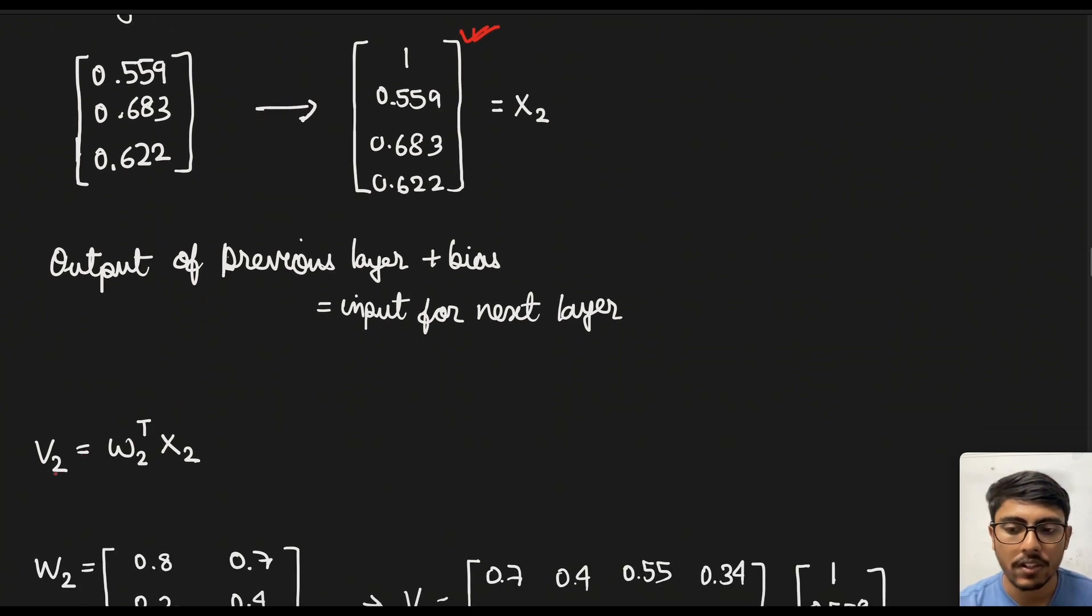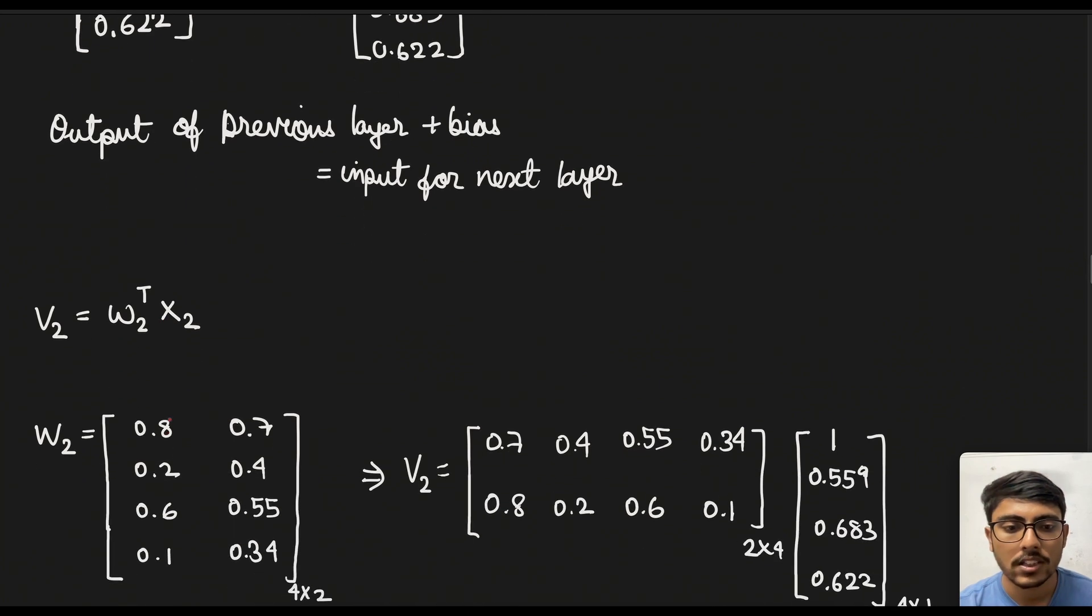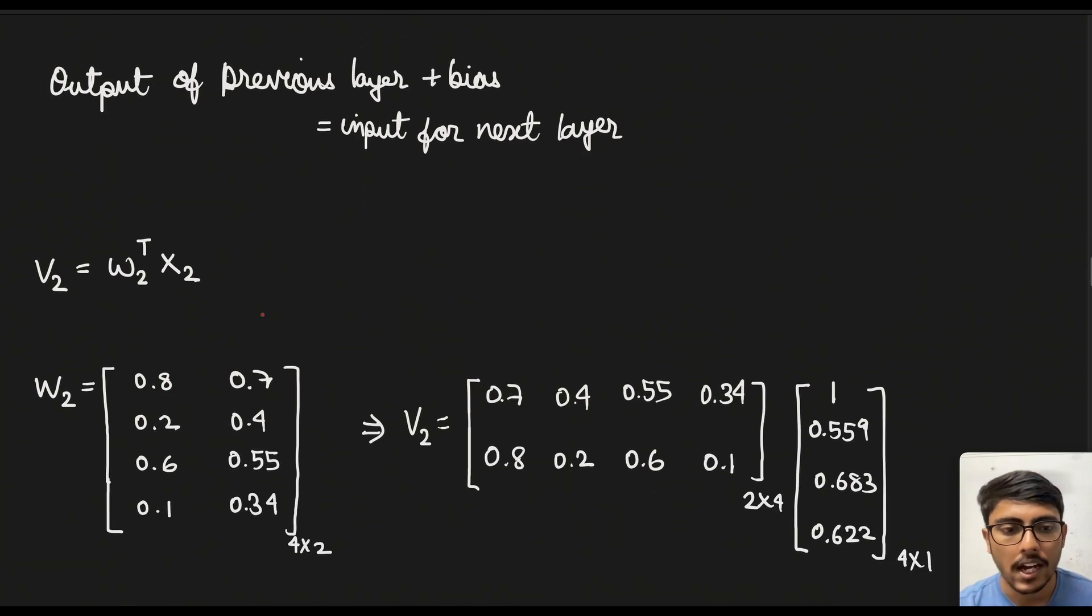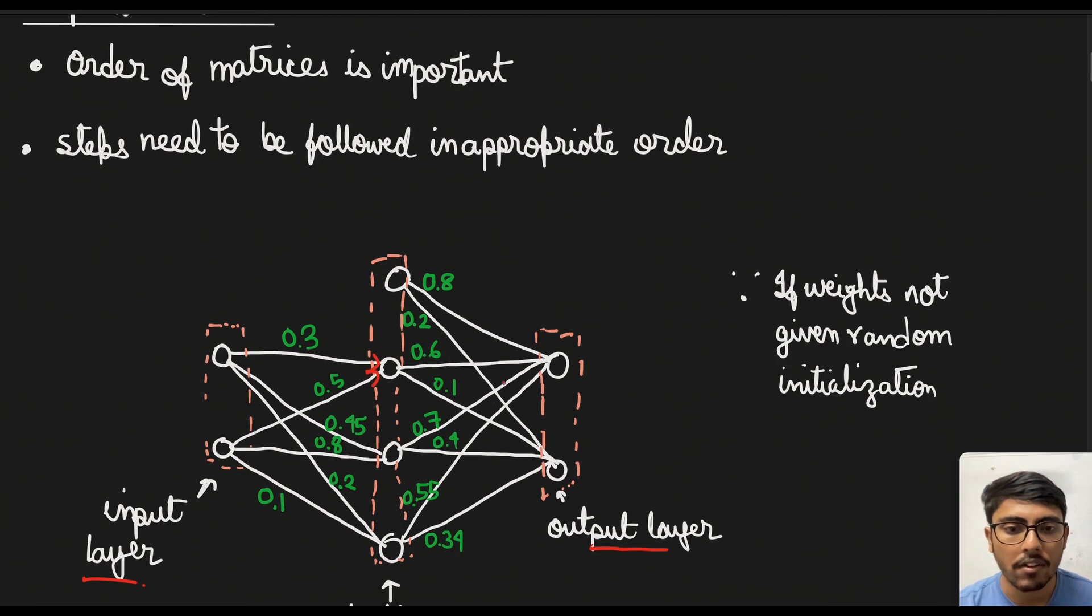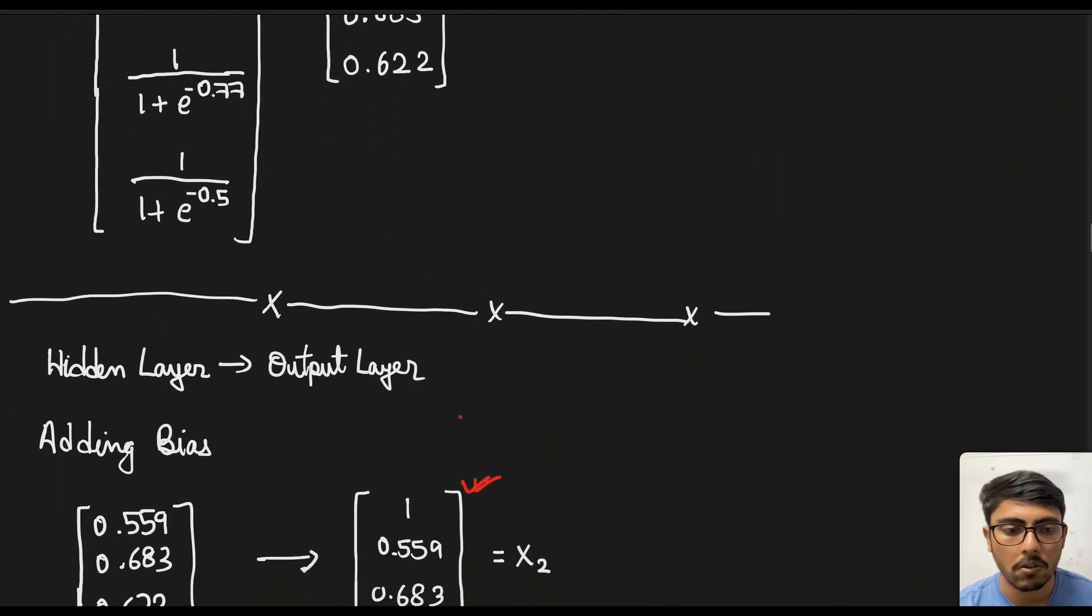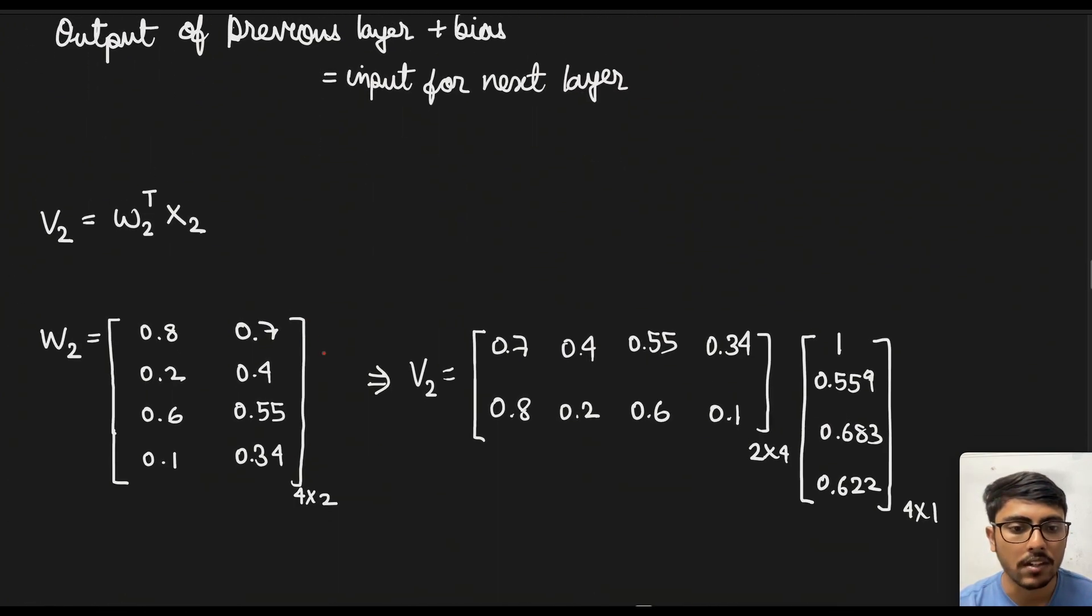So we now need to find the next induced field which is w2 transpose x2. Similarly here we will have the w2 and if we go above you see there are two neurons so there will be two columns and each column will have four rows because four edges are connected. So if you go down you see two columns and four rows so 4 × 2 matrix.